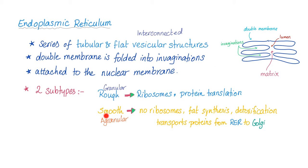The smooth or agranular endoplasmic reticulum has no ribosomes. It helps in fat synthesis, detoxification, and transport of proteins from the rough endoplasmic reticulum to the Golgi apparatus.